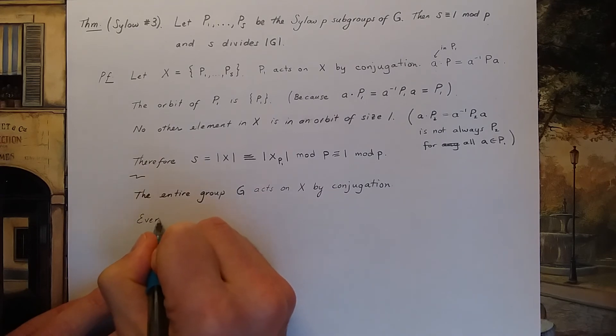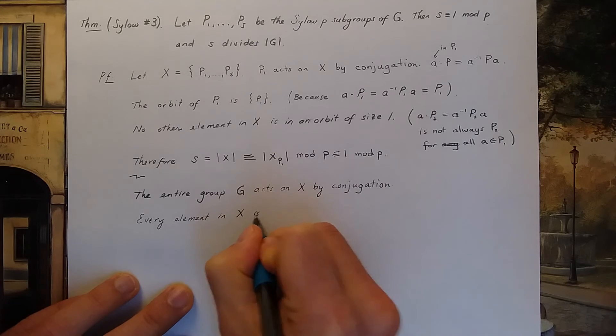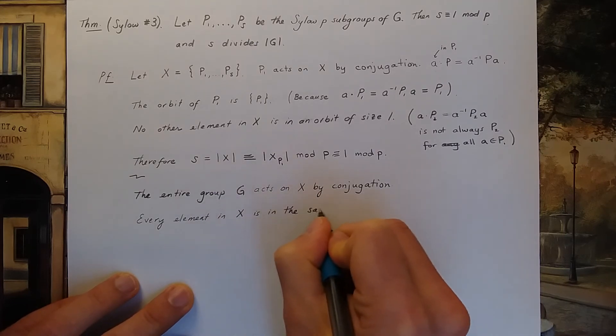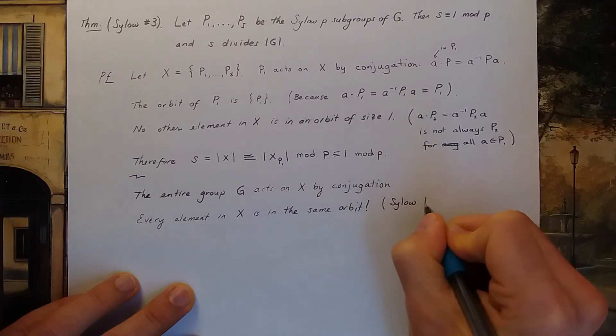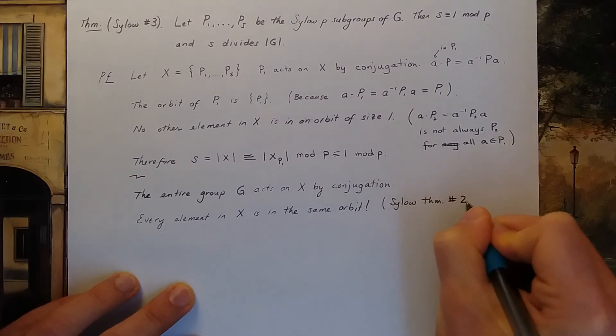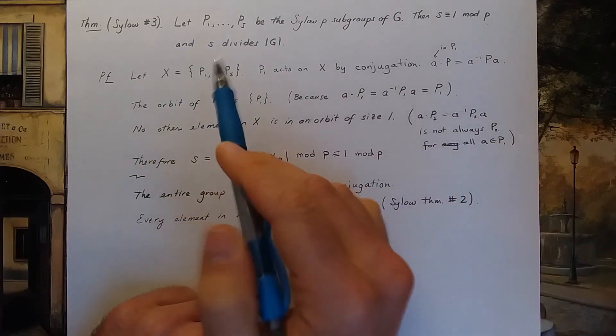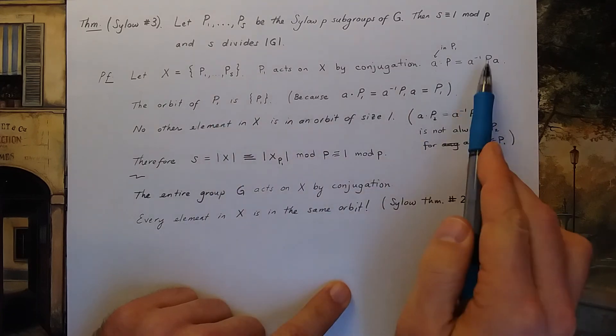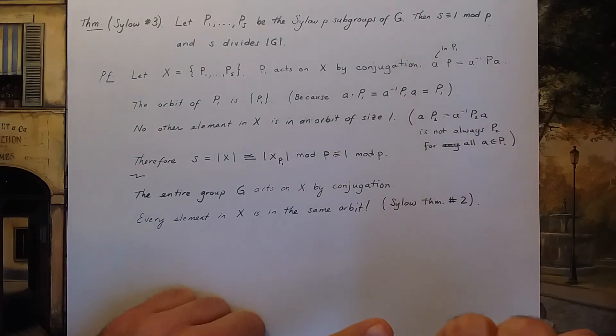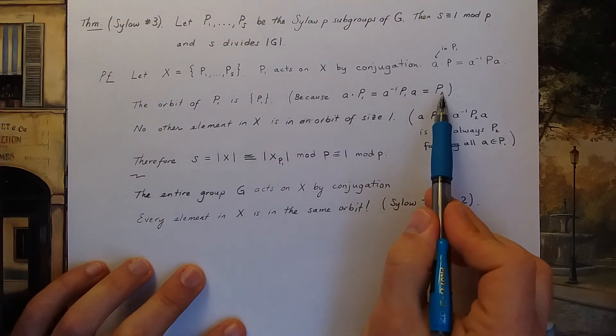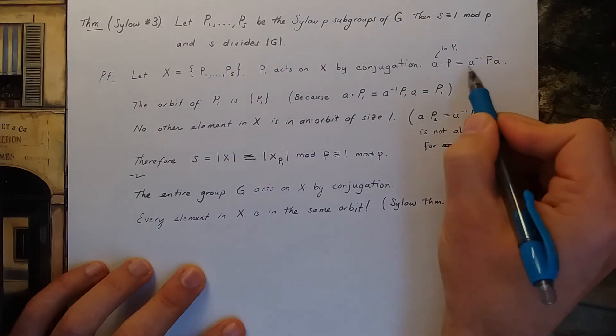In this case, every element in X is in the same orbit. This is a result of CELO theorem number 2. CELO theorem number 2 says if you take any two CELO p-subgroups, they're conjugate. You can get one CELO p-subgroup from another by doing this operation. That means you could start with P₁ and find any other CELO p-subgroup you'd like by doing a⁻¹P₁a for some element a in the group.